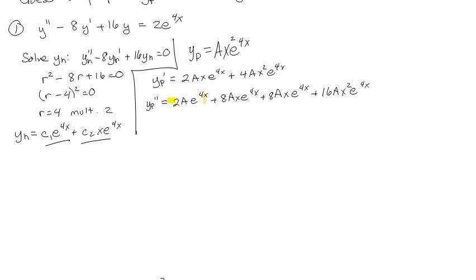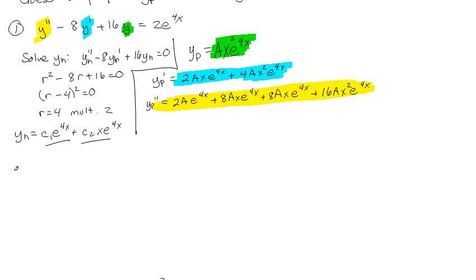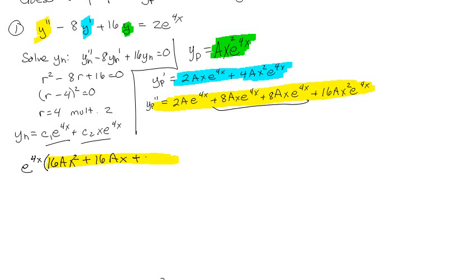I'm going to do the double prime part, then the prime part, then the green part — the regular part. I'm going to leave an e^(4x) out front. So the yellow part: 16ax² plus 16ax plus 2a. Beautiful. Minus 8 times the blue part: minus 8 times 2ax plus 4ax².